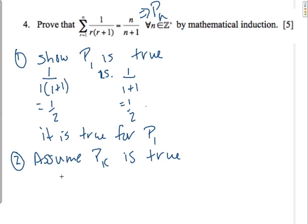In sigma notation, what that means is I am going from r equal to 1 to k. And it's still 1 over r times r plus 1. And that is going to equal to k over k plus 1. This is my assumption step. I will use this to substitute.